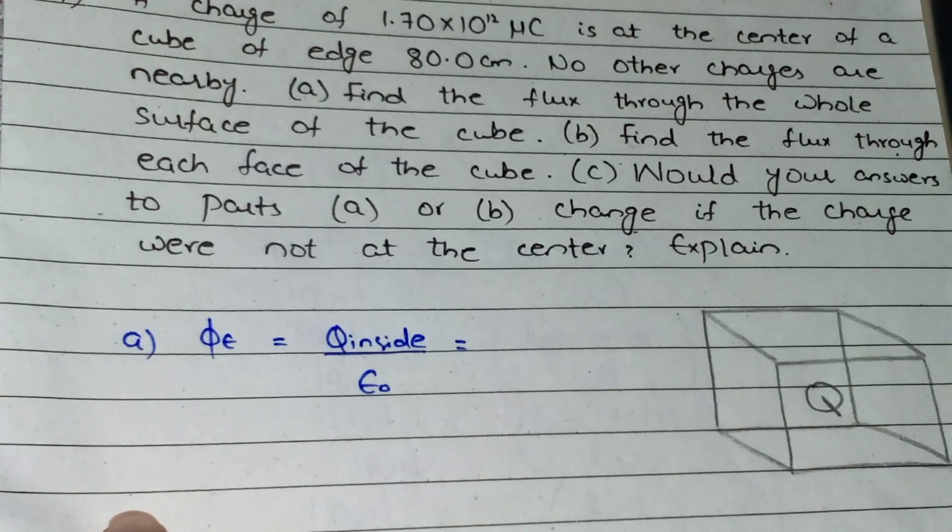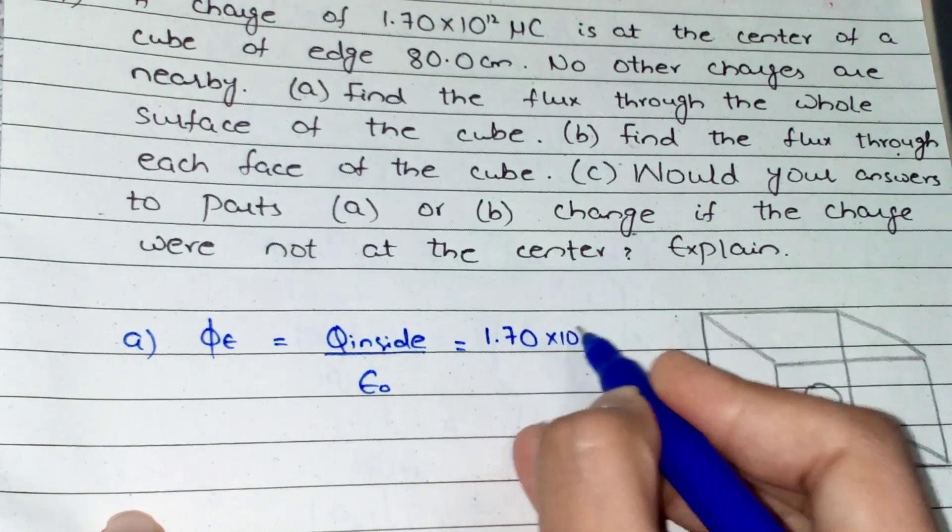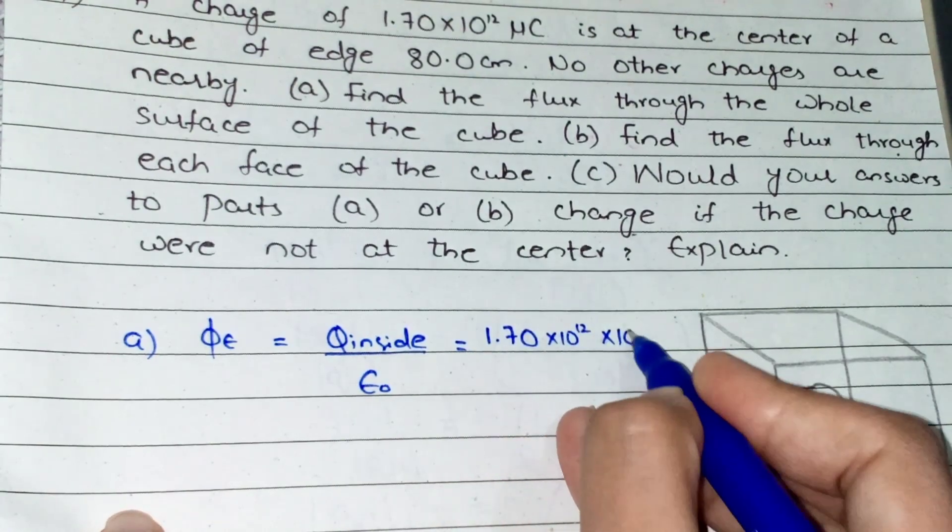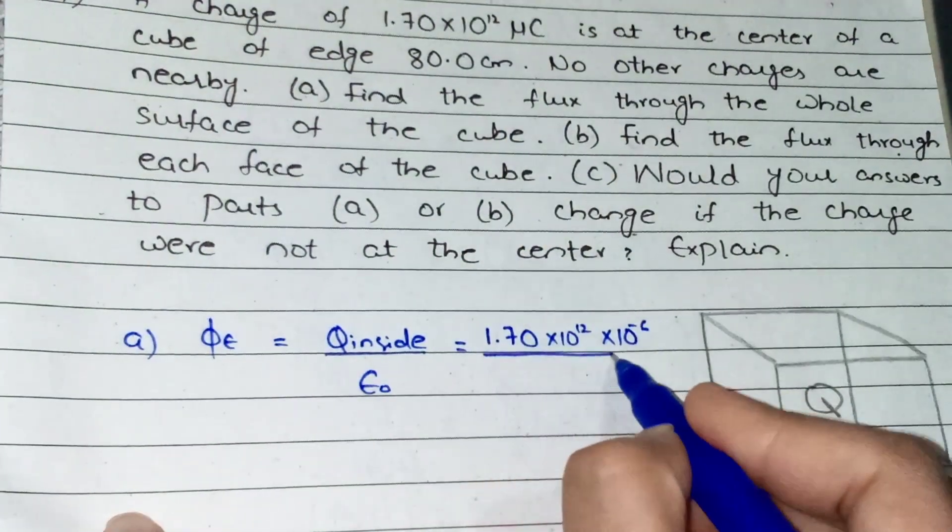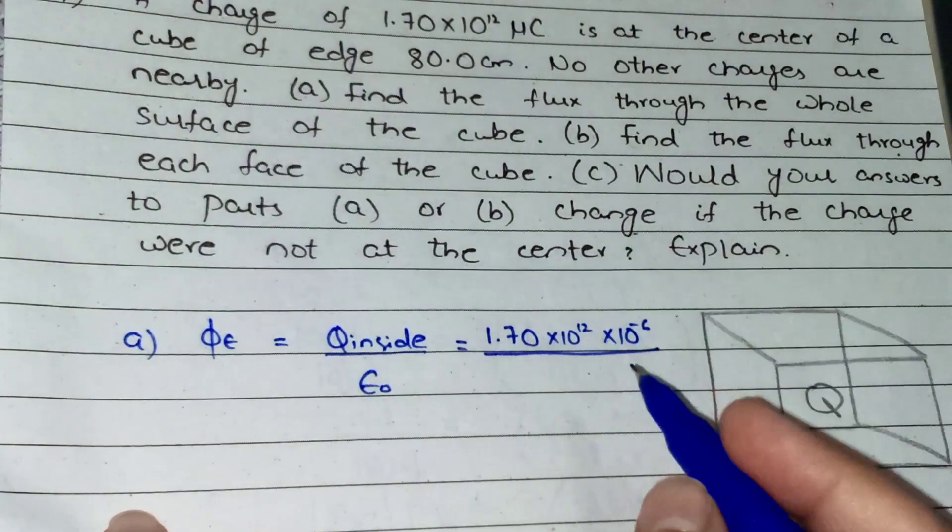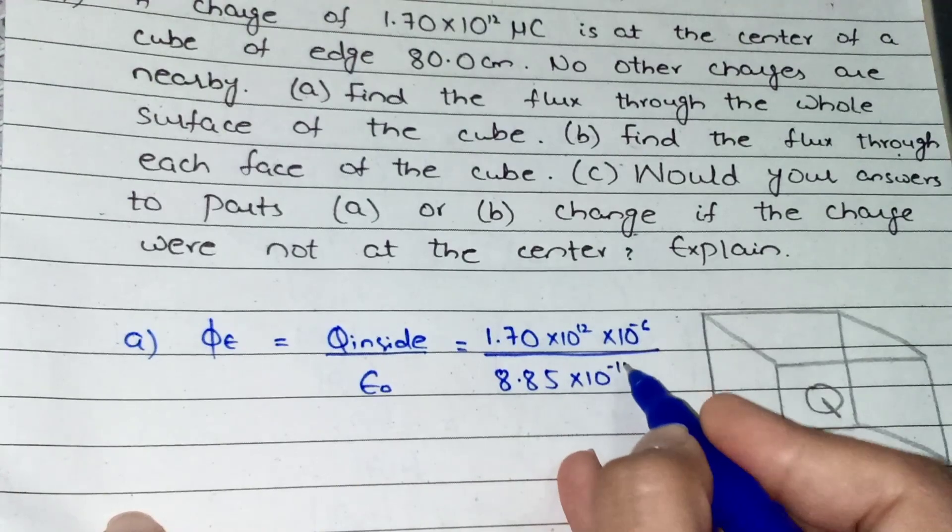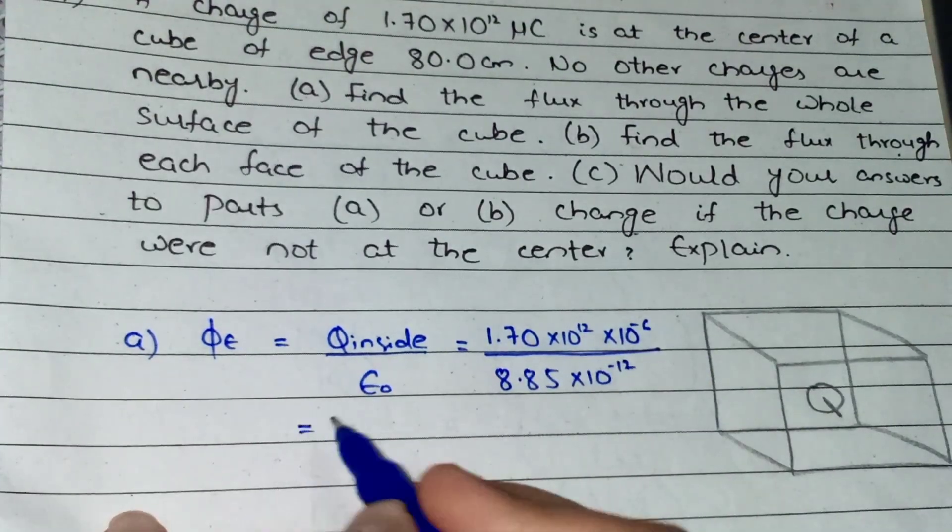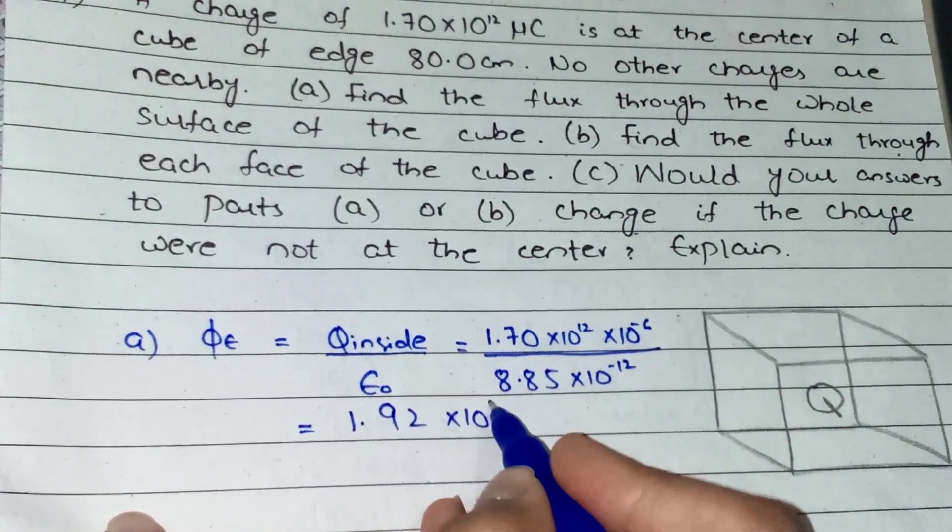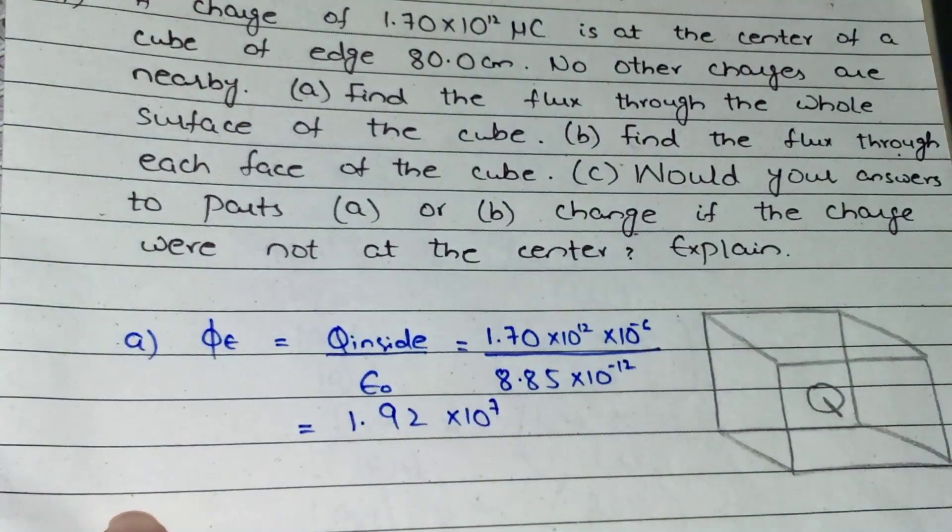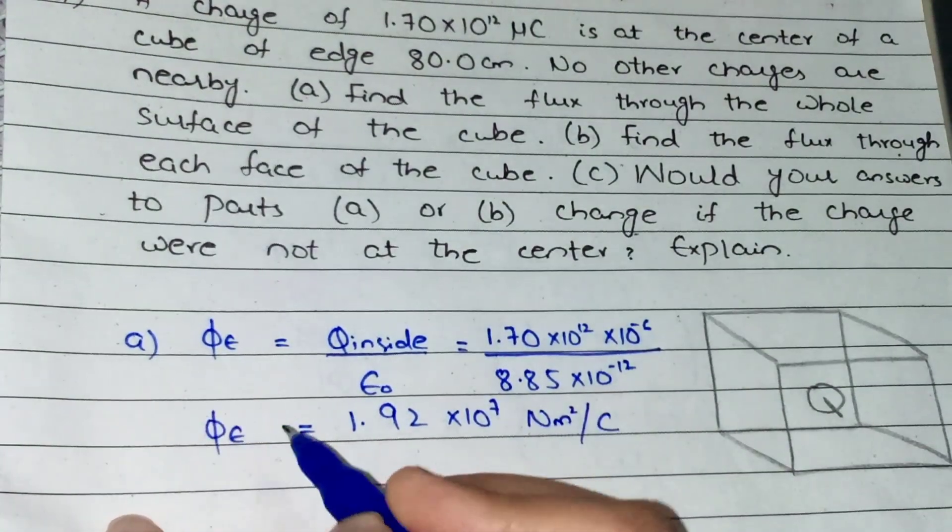Make sure to convert to coulombs. This will be 1.70 times 10 to the minus 6 to remove the micro coulombs, divided by epsilon which has a constant value of 8.85 times 10 to the minus 12. When you divide them in the calculator, you will get 1.92 times 10 to the 7. The unit of flux is newton meter squared per coulomb. So this is part A solved.